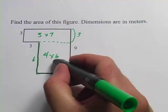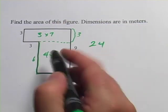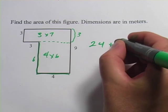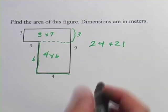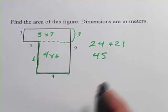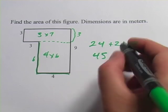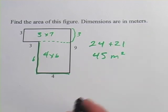4 times 6 is 24, 3 times 7 is 21. We add those together and get 45. Once again, dimensions are in meters, so this is square meters because it's area.